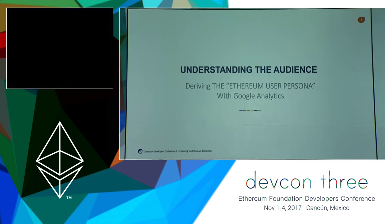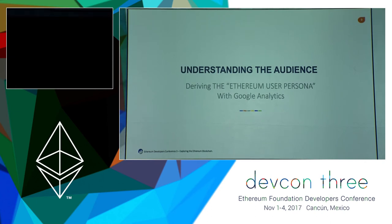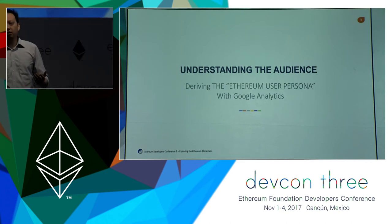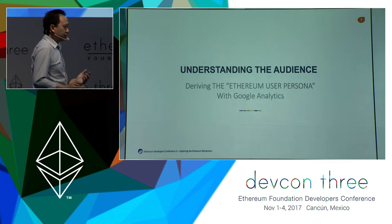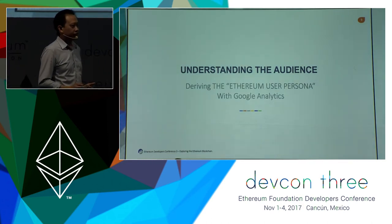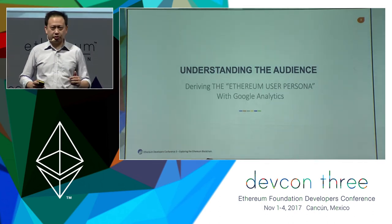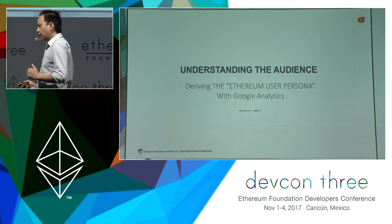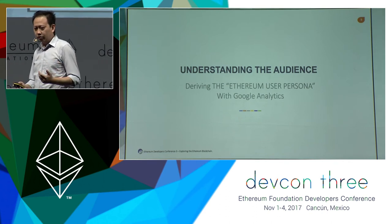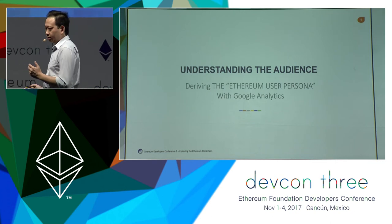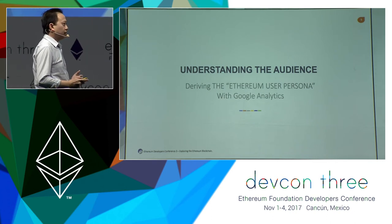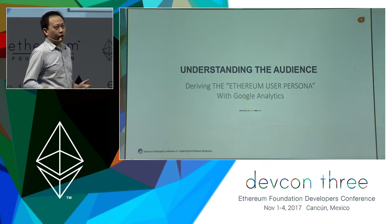For the next section, I would like to talk about deriving the Ethereum user persona with Google Analytics. As a blockchain developer or developer in general, one of the things I found extremely useful when building applications is to first understand who your target audience is — who your users are, who your customers are. At Etherscan, as a base layer infrastructure service for the Ethereum blockchain, we serve a diverse range of Ethereum users from all across the globe. I'd like to share our Google Analytics data derived over the last two and a half years, which we feel will provide a rough indication of what the typical Ethereum blockchain user looks like.